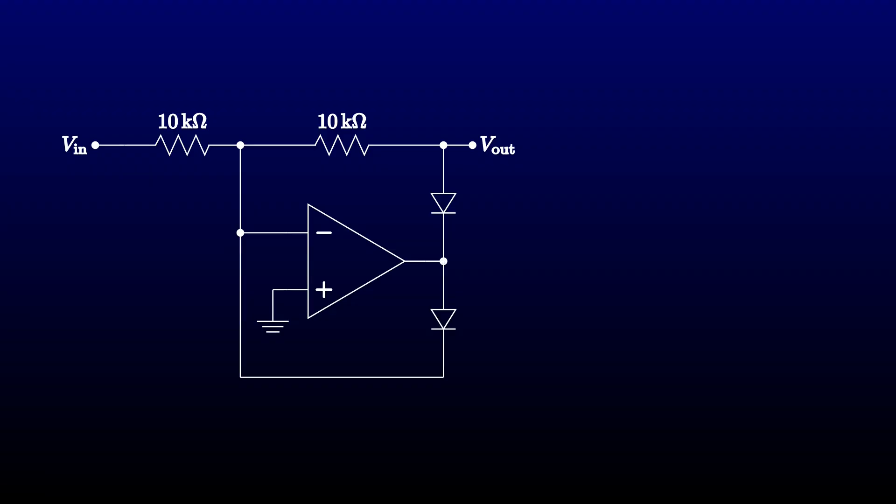It might not be obvious at first what's going on, so let's take it step by step. To start with, remember that the inverting input of the op-amp will be a virtual ground as long as the feedback loop is working.